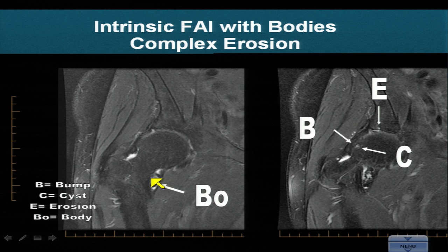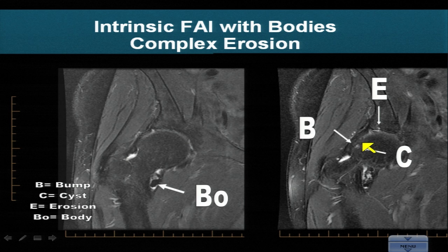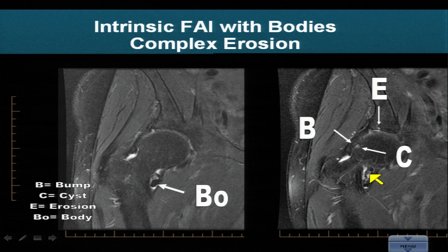Making matters more challenging, in the hip flexion and internal rotation position, there is a bump and a cyst that are pressed even further and earlier against the anterior acetabulum. In flexion and internal rotation, the body is pushing the femoral head superiorly, exacerbating the situation, and eventually the labrum tears and a marginal erosion ensues.